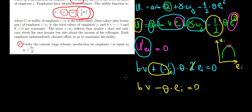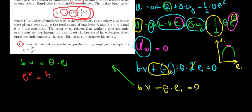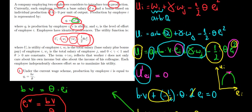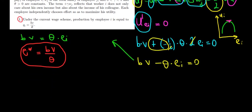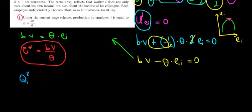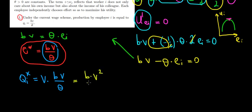Solving for the optimal effort: B times V equals theta times E, so the optimal effort is E* equals B times V divided by theta. Since output Q equals V times E, the optimal output is Q equals V times B times V over theta, which equals B times V squared divided by theta.